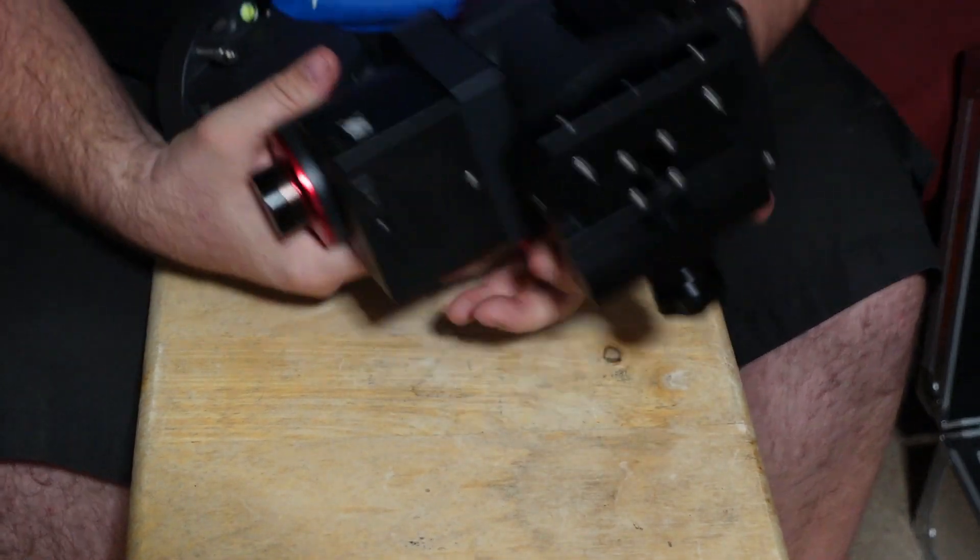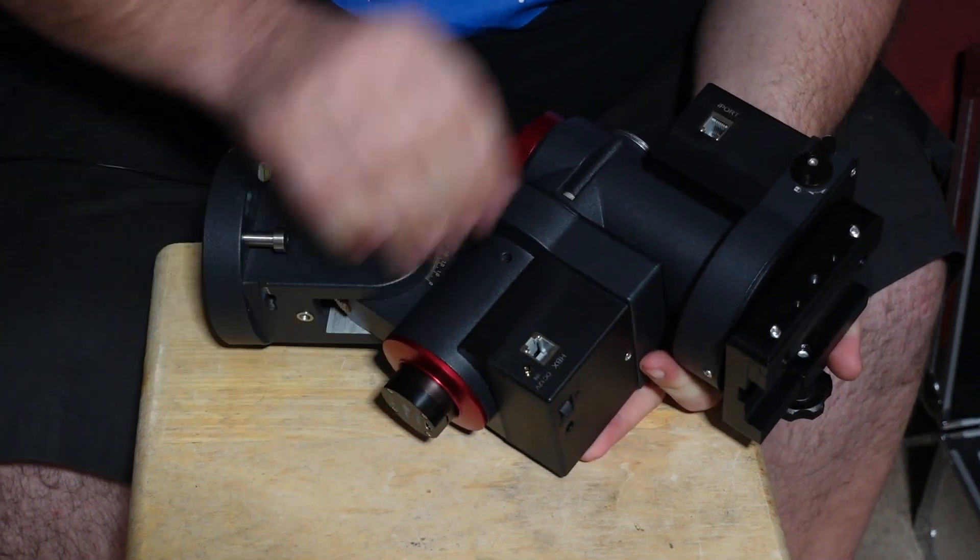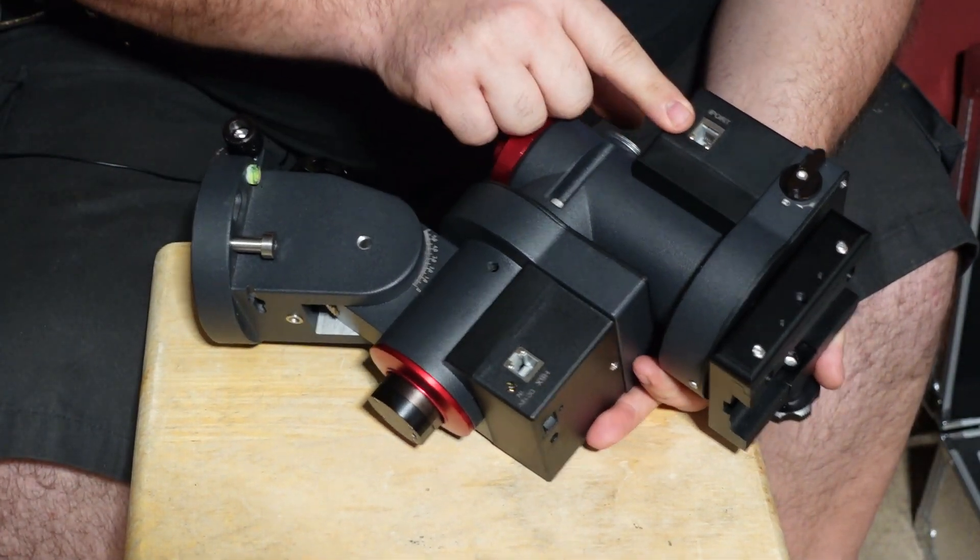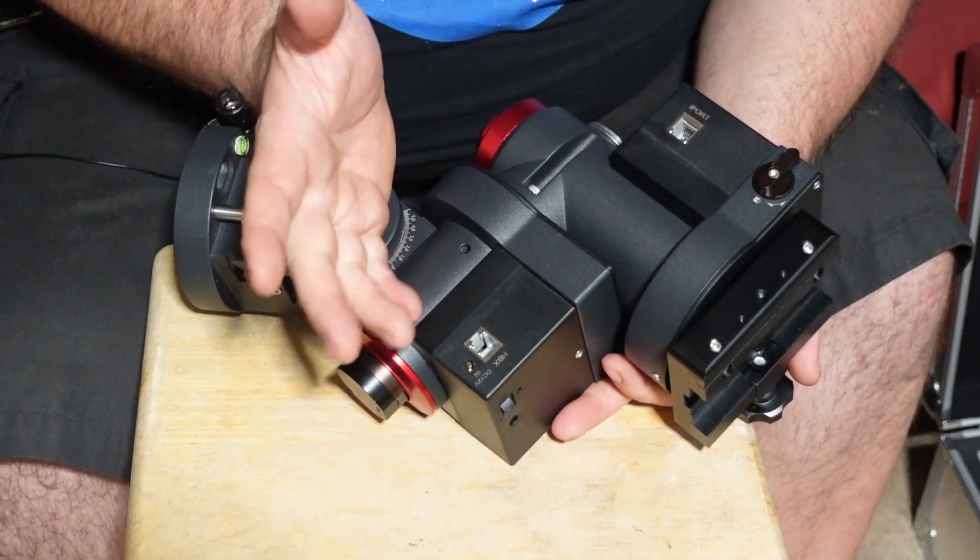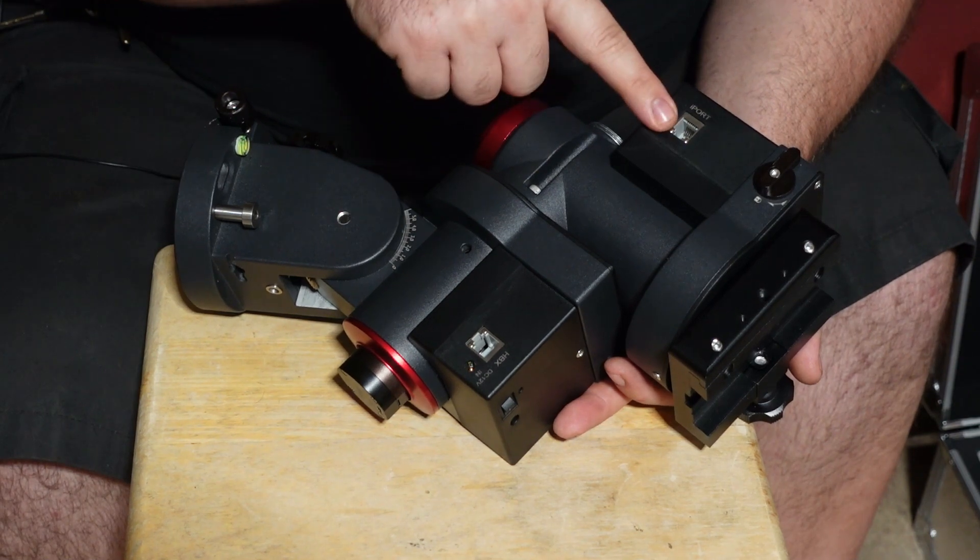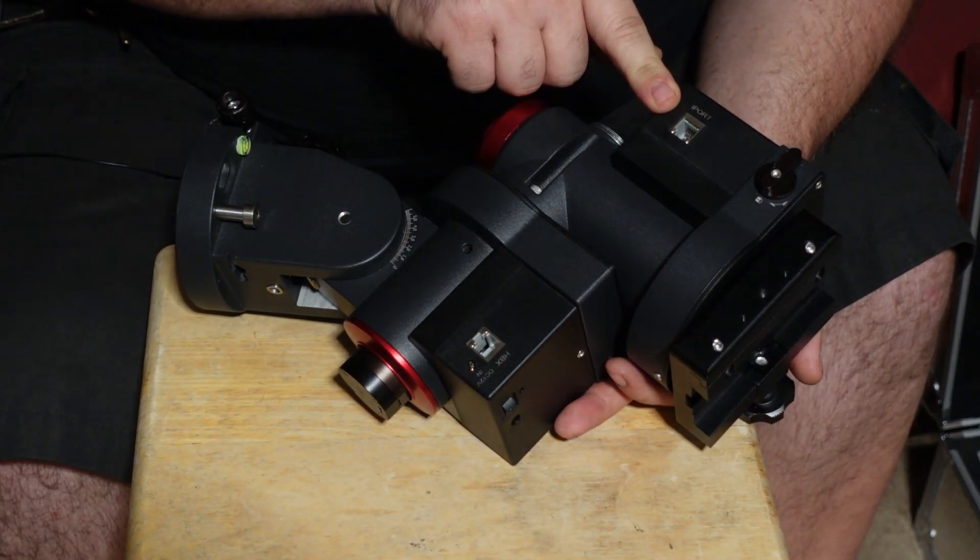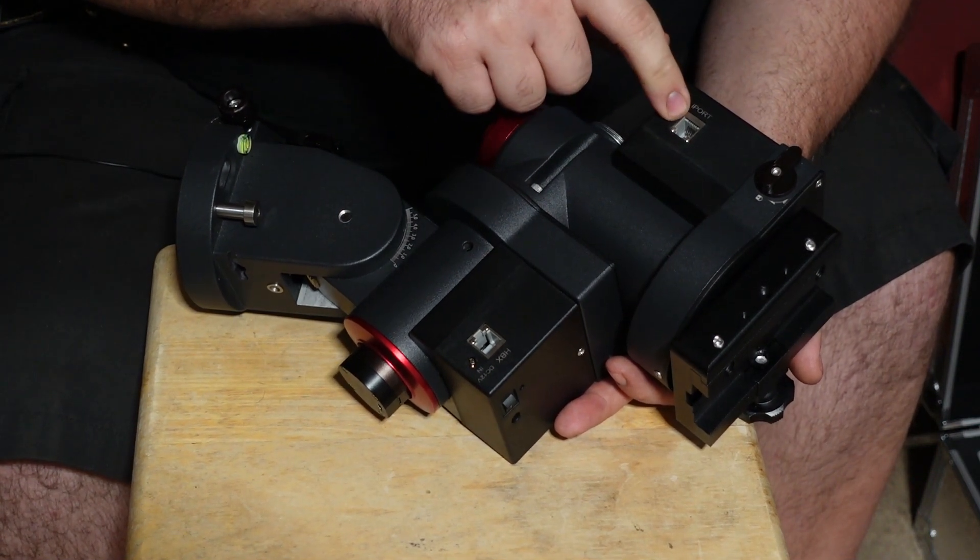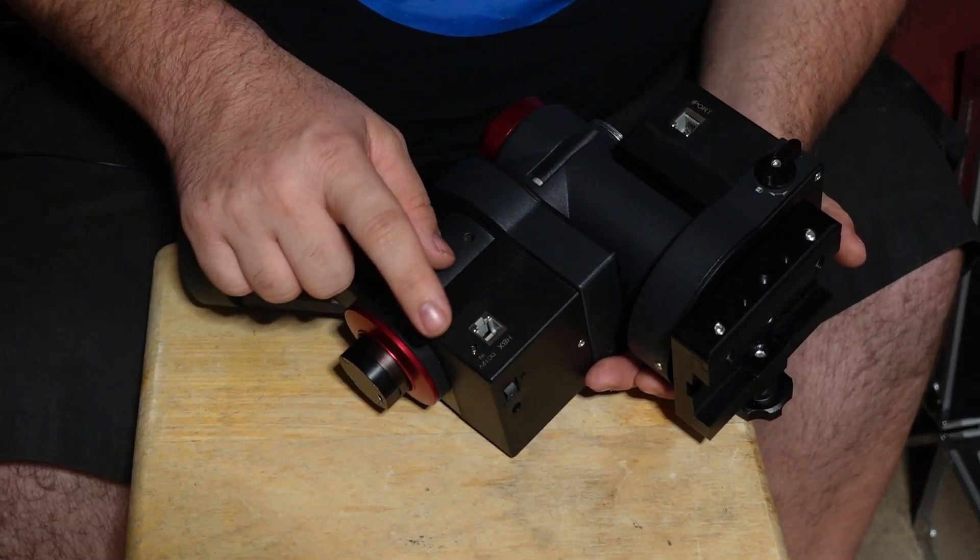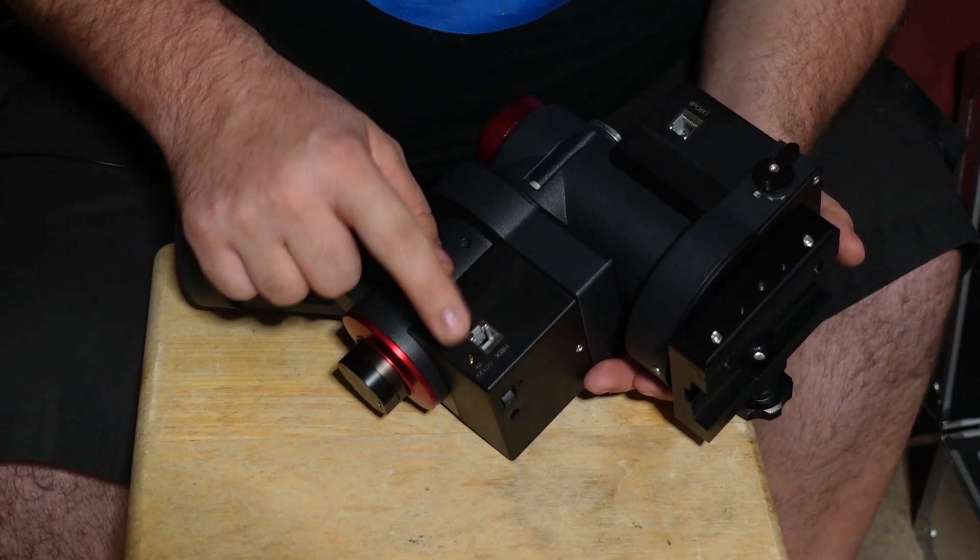This is your guide port if you're one of those people that use ethernet cables or phone cables to do your guiding as opposed to USB. And then on this side you have a port that they called iPort - I'm not sure what this is used for. You have your HBX which is your hand controller, and then you have your power in, 12 volts in.